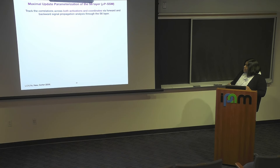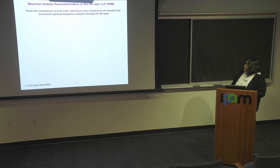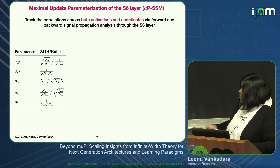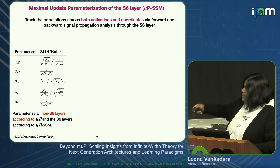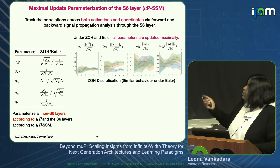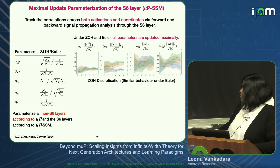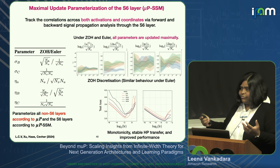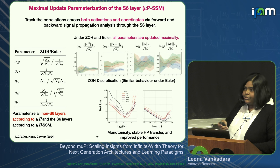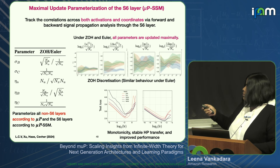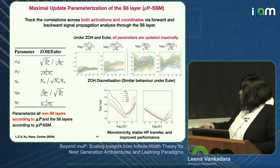The final parameterization differs for different discretization rules, and also differs for W_B and W_C even though they have the same shape. We parameterize all non-S6 layers with standard MuP and the S6 layers according to this derived parameterization. Under both discretizations, all parameters get maximally updated. We get all the benefits that MuP gives for standard architectures: monotonic improvement with scale, better stability, hyperparameter transfer for learning rate, and better overall performance. On the right is the correct parameterization, on the left is standard—performance now improves monotonically with scale.